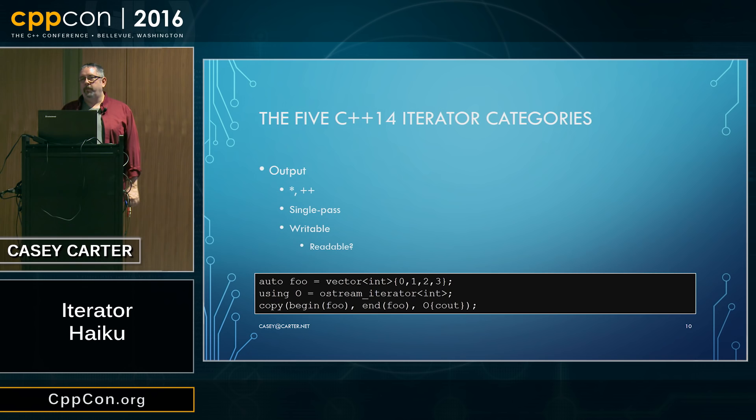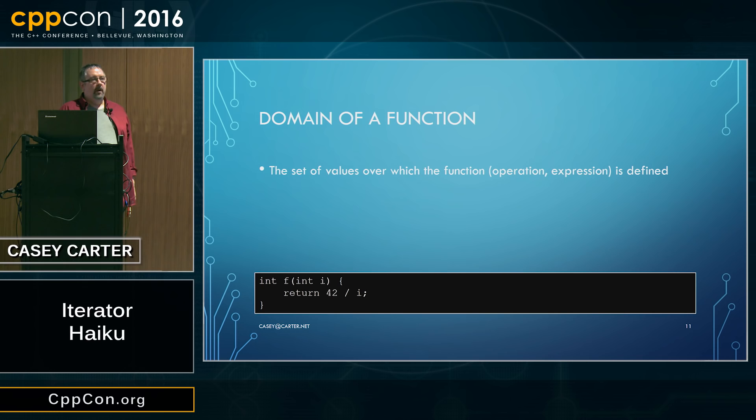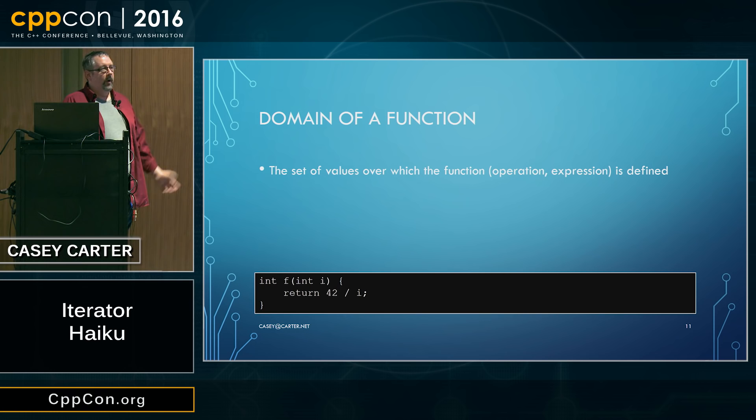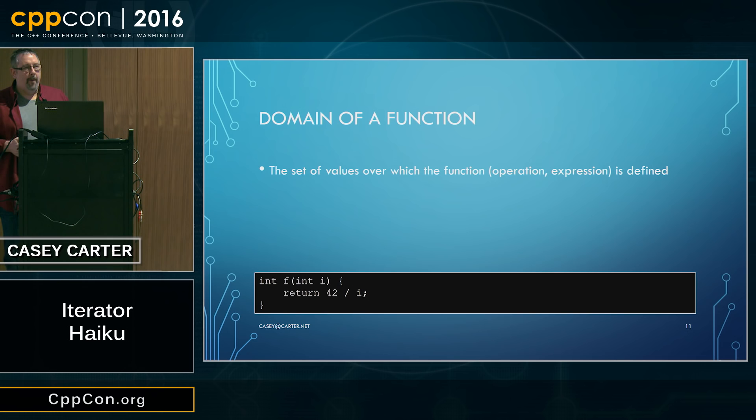The interesting feature we have to cover is the domains of these operations. We've talked about the kinds of operations I can do on these types, but we don't know when I can do these operations or what values it's legal to apply them to. So we're going to talk about the domain of a function. The domain of a function is the set of values over which the function is defined.